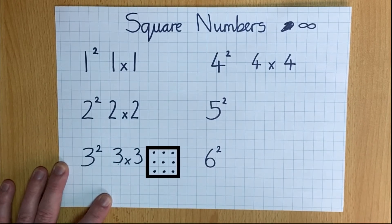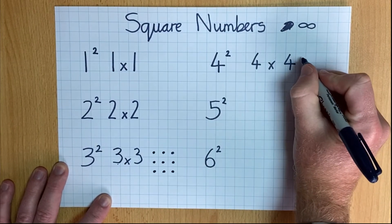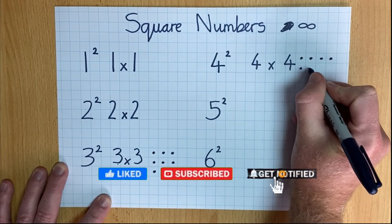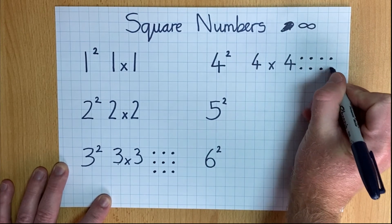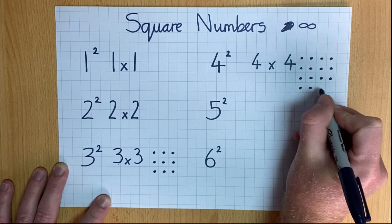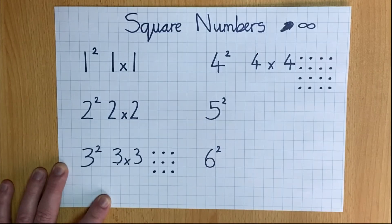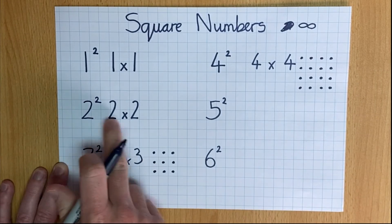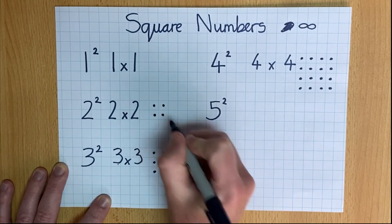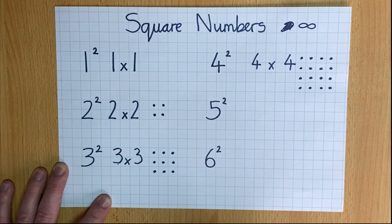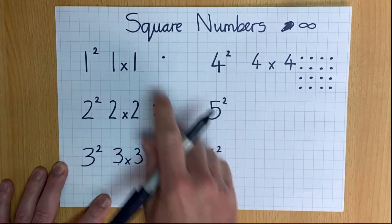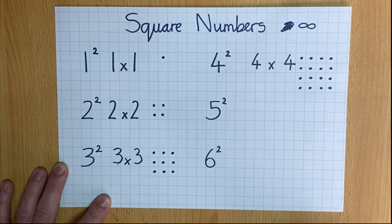What shape can you see? Four times four — four rows of four dots. What shape can you see? Two times two, two rows of two. What shape can you see? Now, one multiplied by one kind of makes a square, but that's the only one that doesn't really look like a square.